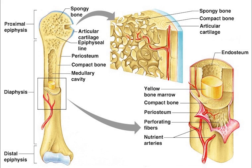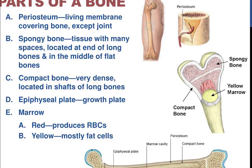Their unique composition and design allows bones to be relatively hard and strong while remaining lightweight. Bone matrix is 90–95% composed of elastic collagen fibers, also known as ossein, and the remainder is ground substance. The elasticity of collagen improves fracture resistance.